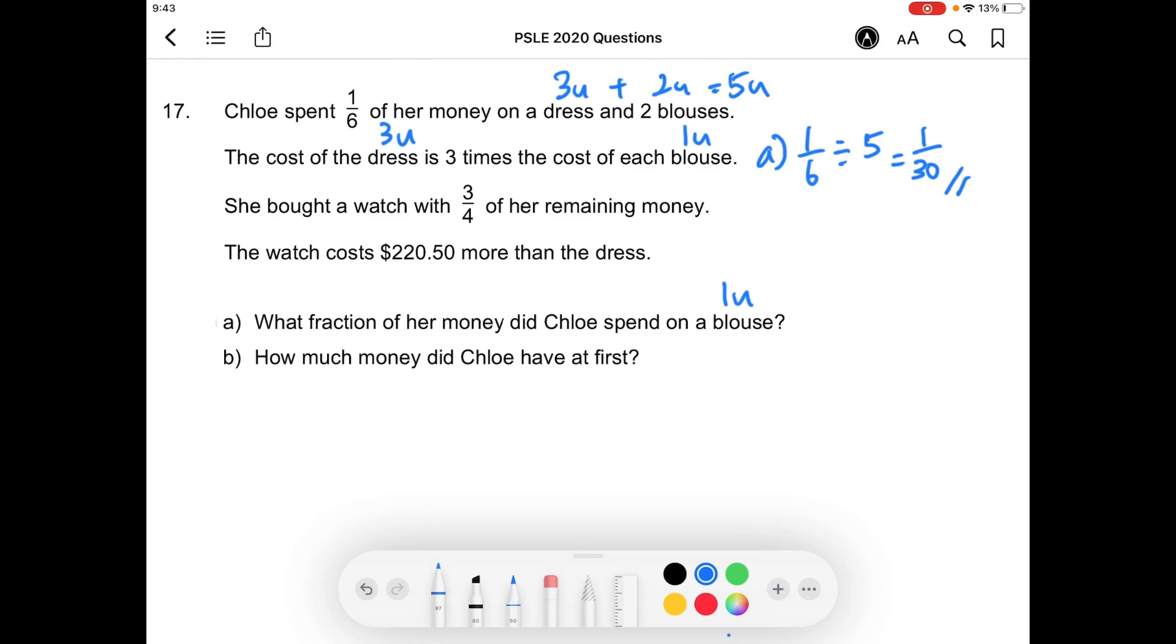We can also find out the fraction of her money that she spent on the dress by simply taking one over thirty times three because the dress costs three times as much as a blouse. You will get one over ten for the dress, and this one over thirty was for the blouse that we found earlier on.